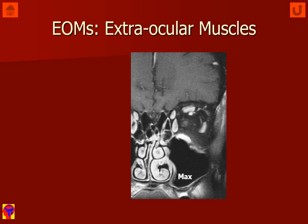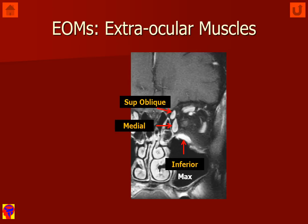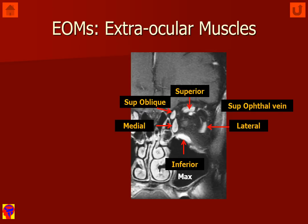If we look at this coronal image, we can see in better detail the extraocular muscles that form the muscle cone. We have the inferior rectus muscle, the medial rectus, the superior oblique, the superior rectus and levator palpebrae muscle. We can see the lateral rectus muscle and we can also see the superior ophthalmic vein.